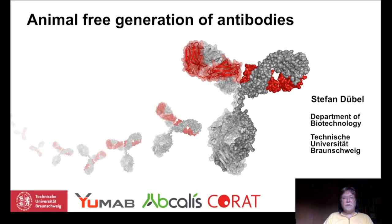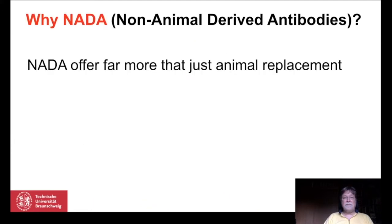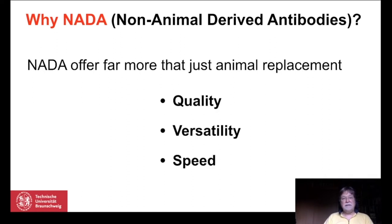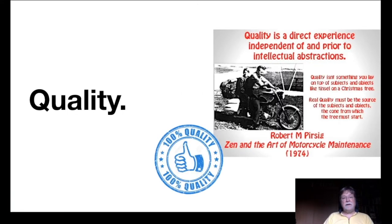Hello everybody. My name is Stefan Dubel. I'm professor at the University of Braunschweig in Germany and I welcome you to my presentation about the animal-free generation of antibodies. These new methods generate antibodies that are not only completely animal-free but also better in quality. We should consider these antibodies because they offer much more than just a replacement — they offer better quality, better versatility, and they can be made much more quickly.